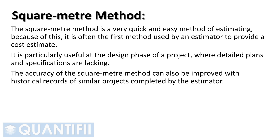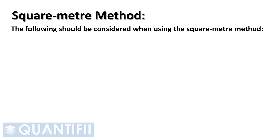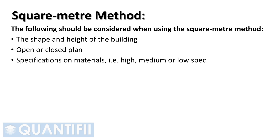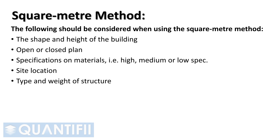The following should be considered when using the square meter method: the shape and height of the building; open or closed plan, which considers the amount of walls built internally; specifications on materials — that is, high, medium, or low specifications; site location, for example if it is near or far from supply sources, or if the site is difficult to access; and if the structure is built using steel, timber, or brick and mortar.